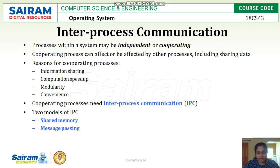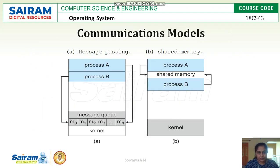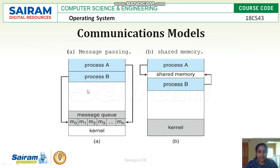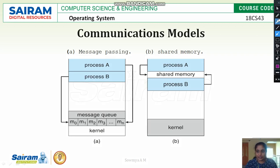Inter-process communication is done with two modules: one is by sharing the memory, or by message passing. So the two communication modules are message passing and shared memory. Here we can see how the message passing technique is working.